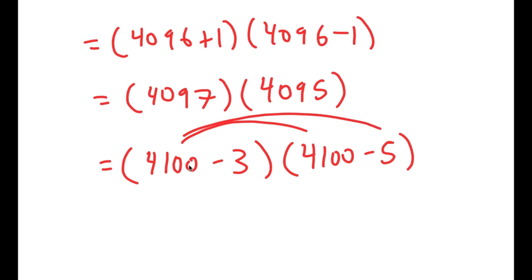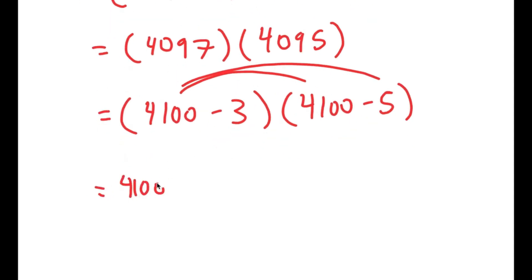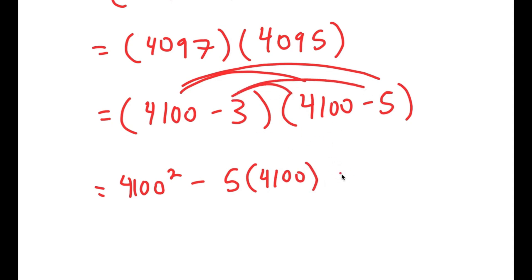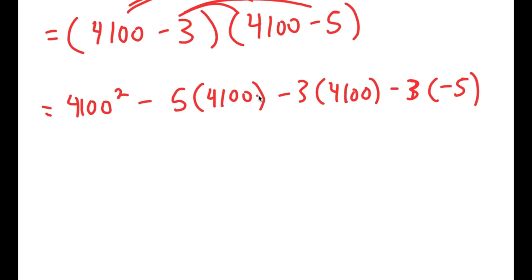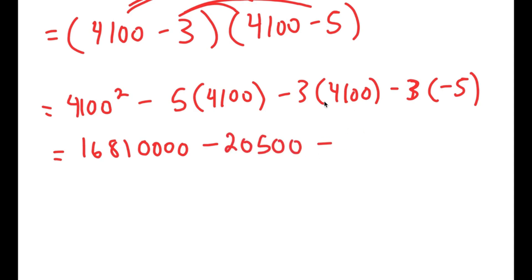So now I'm going to distribute 4,100. I get 4,100 squared minus 5 times 4,100, and then minus 3 times 4,100, minus 3 times negative 5. Now, 4,100 squared is equal to 41 squared plus 4 zeros. 41 squared is 1,681, so I add 4 zeros to get 16,810,000. Then minus 5 times 4,100: 5 times 41 is 205, plus two zeros gives 20,500. Minus 3 times 4,100: that's 123, plus two zeros gives 12,300. Minus 3 times negative 5, which is positive 15.